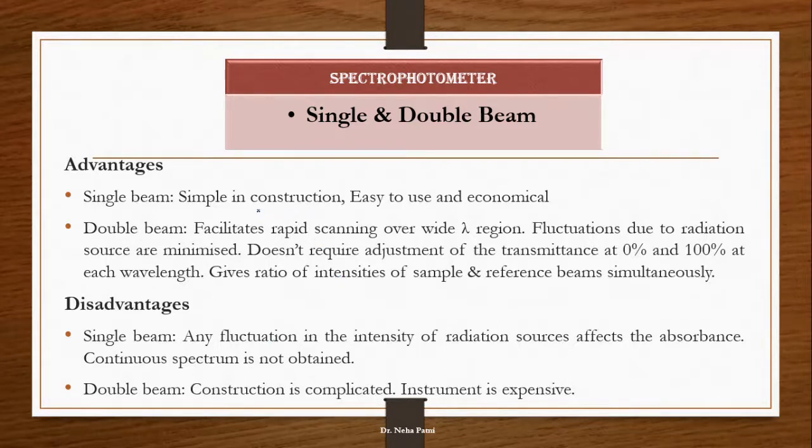Advantages of double beam: it facilitates rapid scanning over wide wavelength region, fluctuations are minimized, and it gives the ratio of intensity of sample and reference simultaneously. Disadvantages: single beam has many fluctuations that will affect the absorbance, and you don't get continuous spectrum. Double beam is quite complicated and expensive, while single beam was simple and quite cheap. This is what you can say about spectrophotometer.